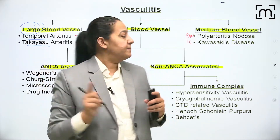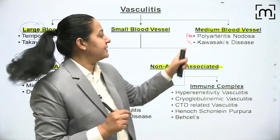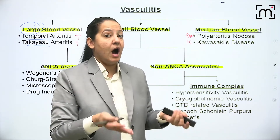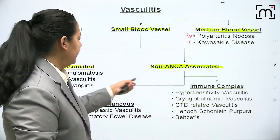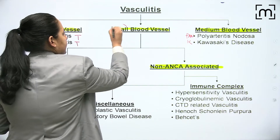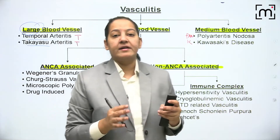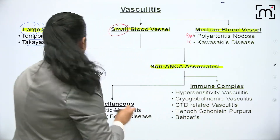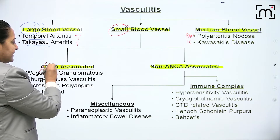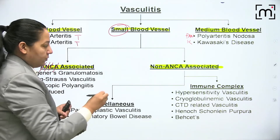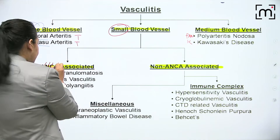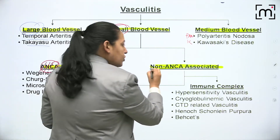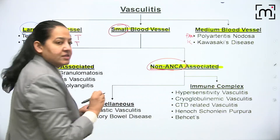In medium vessel vasculitis we have only two: polyarteritis nodosa (PAN) and Kawasaki disease - mnemonic P and K. In small vessel vasculitis, arterioles and capillaries are involved. Small vessel vasculitis is divided based on whether it is ANCA positive or ANCA negative. ANCA stands for anti-neutrophilic cytoplasmic antibodies.